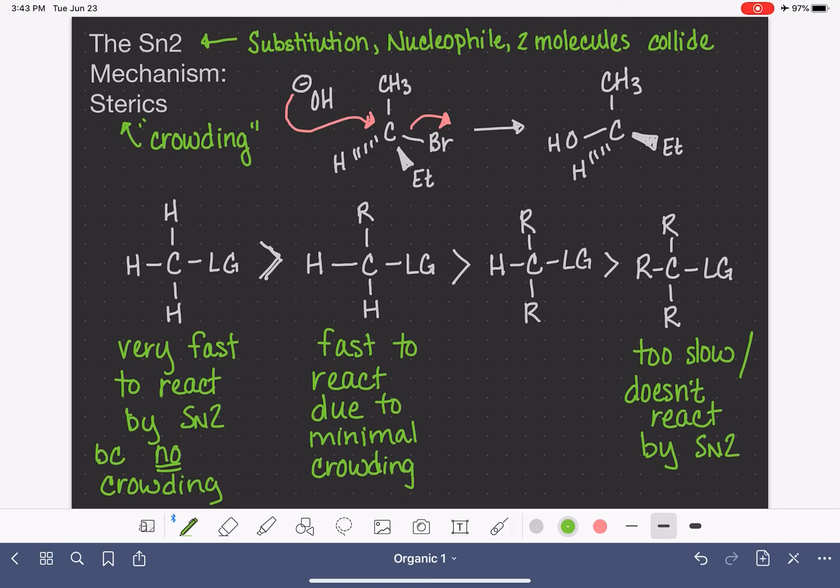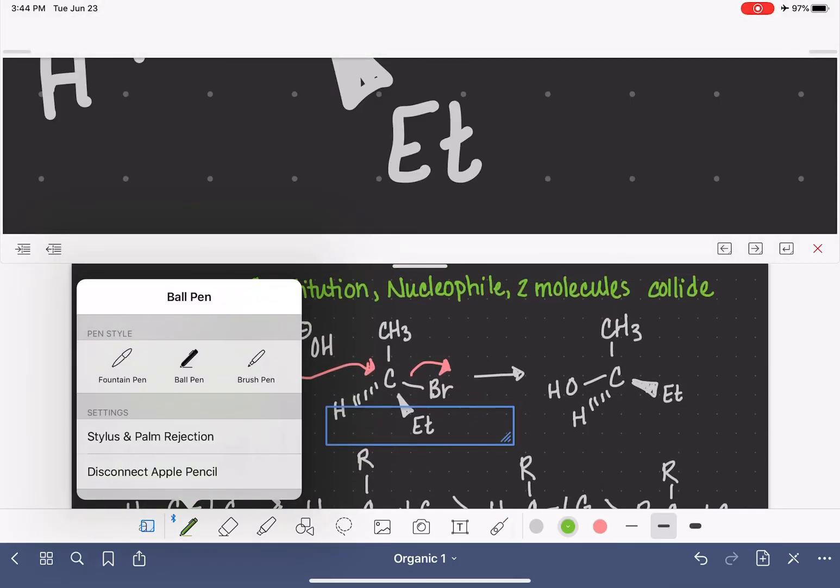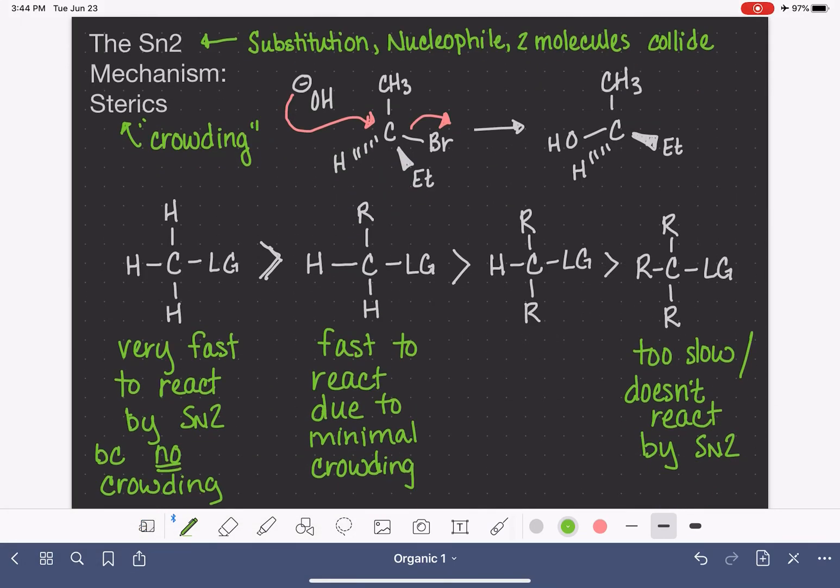Textbooks will typically say that a carbon that has no hydrogens on it at all is not going to react at all by SN2. And that's a bit of a lie, because they will react eventually. It's just so extremely slow that it's not useful for us at all. The slowest would be the carbon that has only one hydrogen on it. So this would be the slowest, reasonable SN2 reaction.